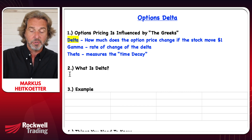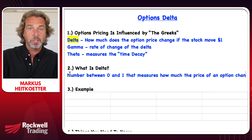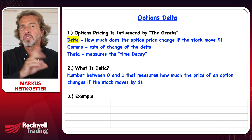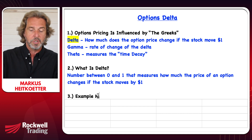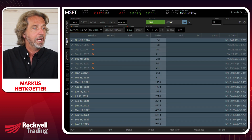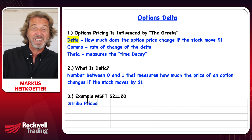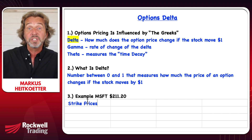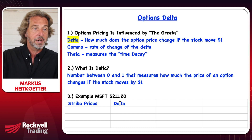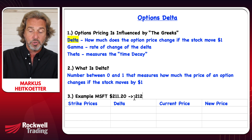Delta is a number between zero and one that measures how much the price of an option changes if the stock moves by $1. Let me show you a very specific example. The example I want to use is Microsoft. Right now Microsoft is trading at $211.20. I want to show you different strike prices of options, because options have strike prices and expirations. We'll look at different deltas, the current price of each option, and the new price if Microsoft moves by $1 — from $211.20 to $212.20.